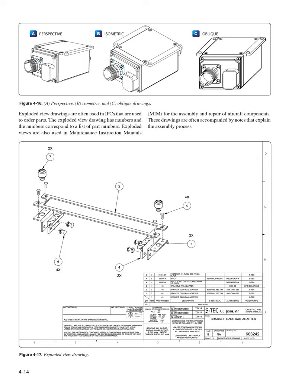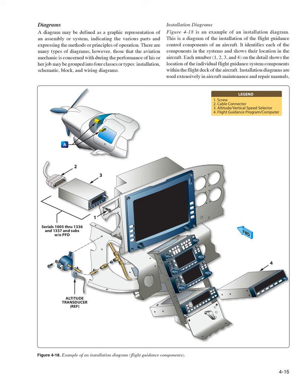Diagrams: A diagram may be defined as a graphic representation of an assembly or system, indicating the various parts and expressing the methods or principles of operation. There are many types of diagrams; those that the aviation mechanic is most concerned with may be grouped into four types: installation, schematic, block, and wiring diagrams.